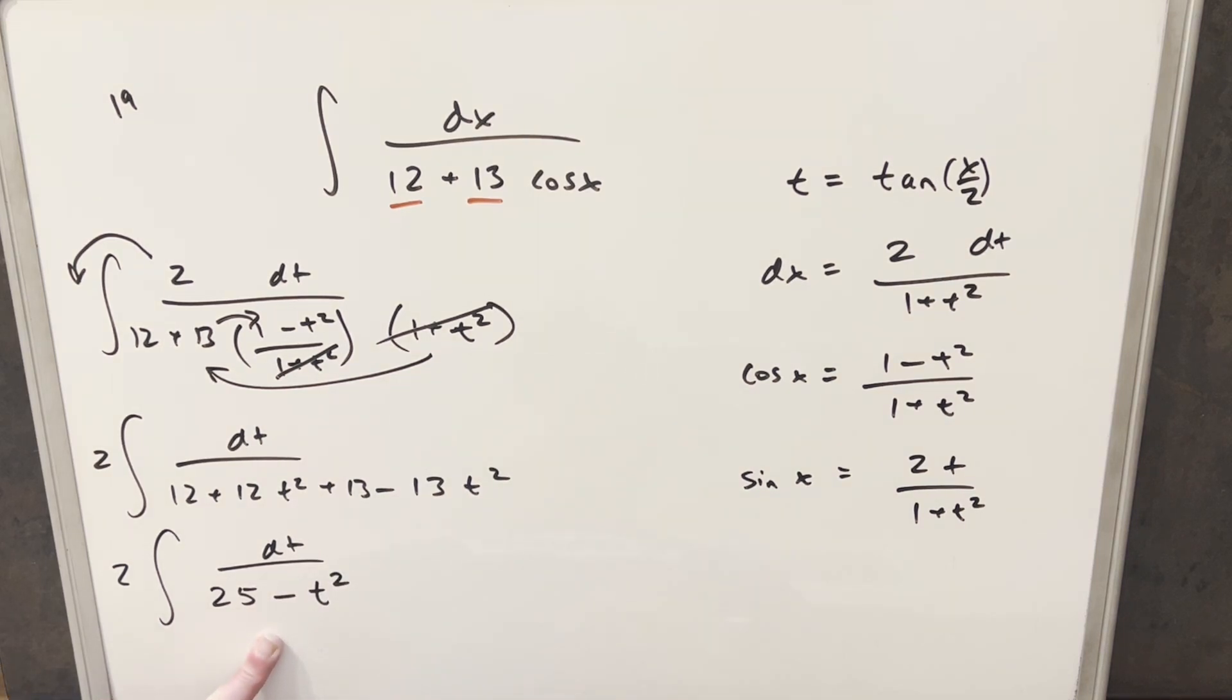But now for this integral here, we'll just do this with a formula. Okay, so we'll use this formula we have over here to the right. And so in this case, 25, we can write this. This can be written as 5 squared. So our a value is going to be equal to 5.